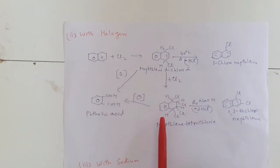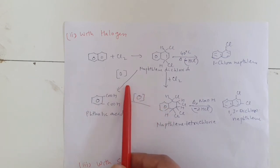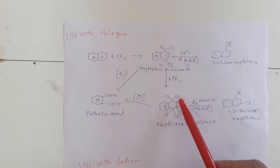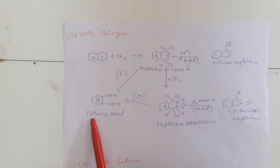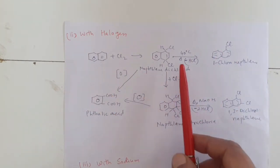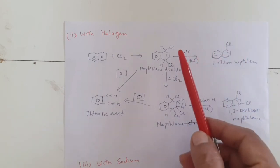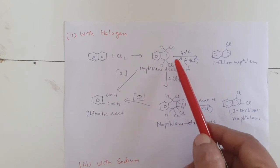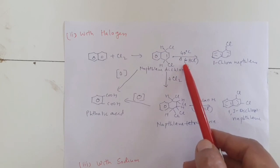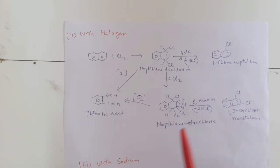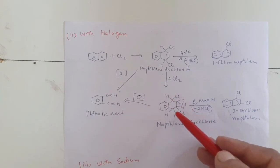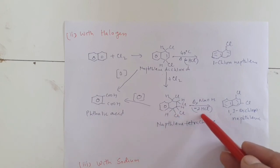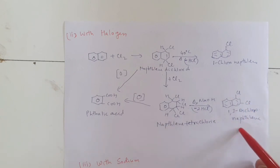This naphthalene dichloride, when oxidized, the ring on which chlorine atoms are present is reactive and we get phthalic acid. If naphthalene dichloride is heated at 40 degrees centigrade, it eliminates HCl — H from one carbon and Cl from another — and we get 1-chloronaphthalene. And if naphthalene tetrachloride is heated with NaOH, two molecules of HCl are removed — H and Cl from one position, H and Cl from another — and we get 1,3-dichloronaphthalene.